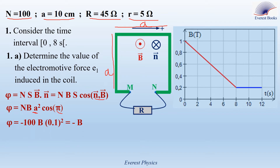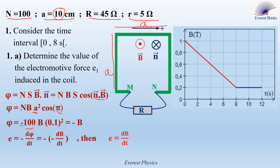Substituting each physical quantity: cosine π equals −1, N equals 100 turns, and A equals 10 cm, which is 0.1 meters. Therefore, the flux equals −B. Using Faraday's law, E equals minus the time derivative of the flux. Therefore, E equals dB/dt. Note that E = dB/dt is not a new general formula — it is a relation valid only for this specific problem, and we will use it throughout.